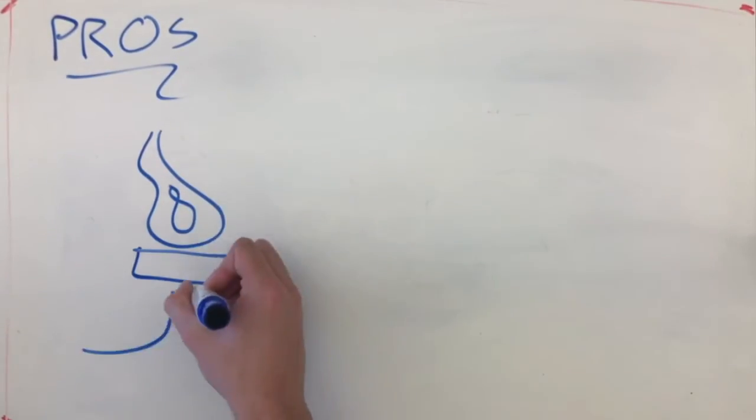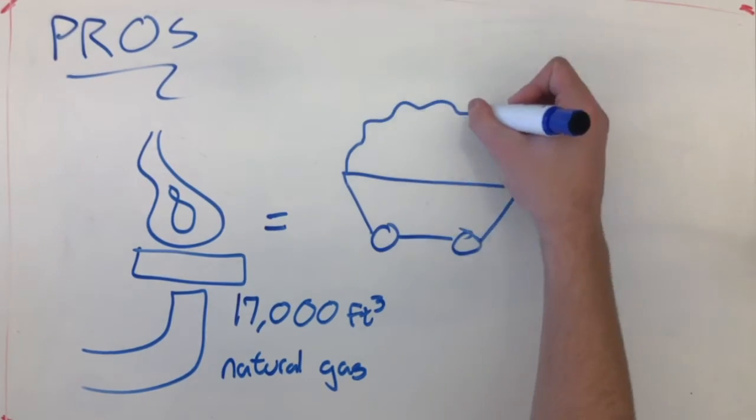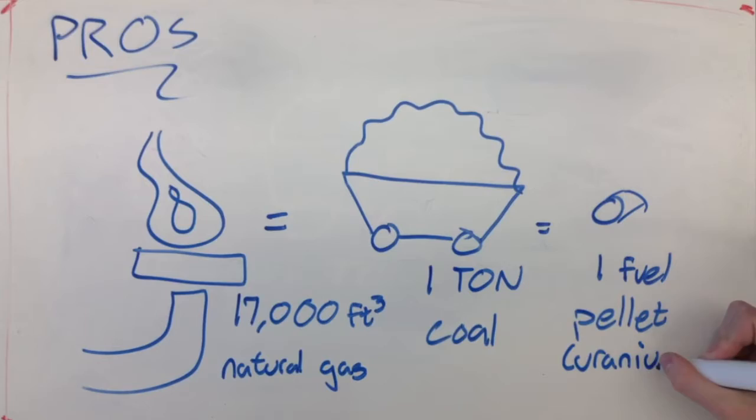Nuclear energy's advantages over traditional energy sources don't end here. For example, nuclear energy is more efficient and more energy dense than the alternatives. 17,000 cubic feet of natural gas or one ton of coal produces as much energy as only one single uranium fuel pellet.